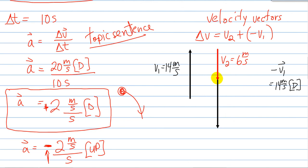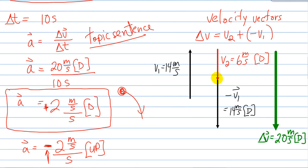And now I can add my two vectors head to tail. In this case then I have a velocity vector of 6 meters per second down. And I have a velocity vector of 14 meters per second down. And collectively that's going to give me a delta v vector of delta v is 20 meters per second and it is pointing down. And in fact we had 20 meters per second.